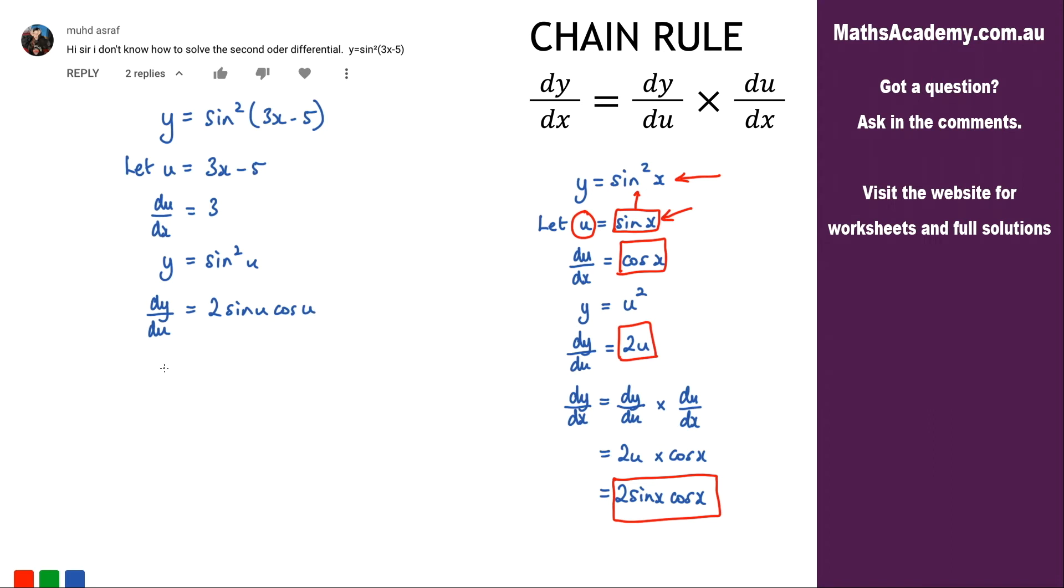Now we want dy by dx so we're going to apply the chain rule. So dy by dx is equal to dy by du multiplied by du by dx.